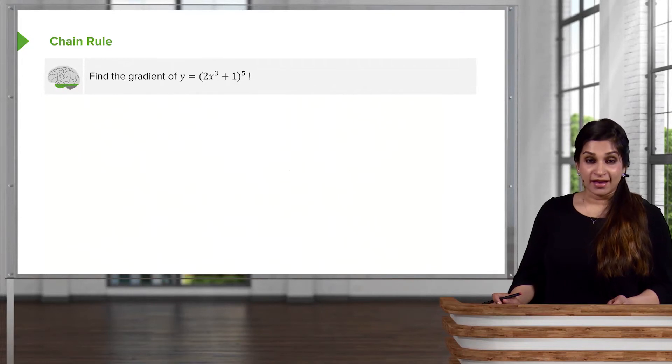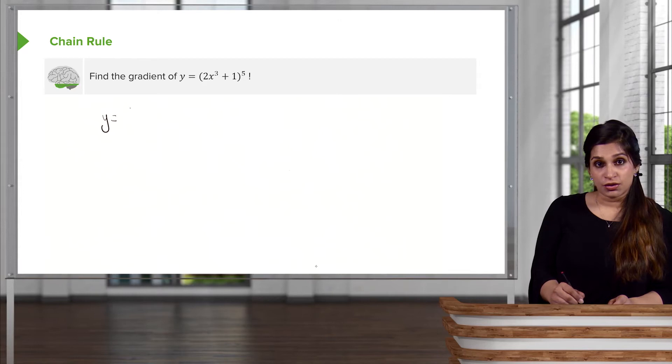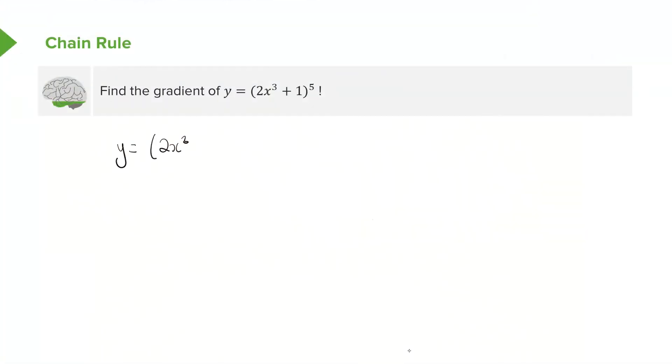So let's look at our problem again, a little bit closely now. We have y = (2x³ + 1)⁵. Now let me just explain what I meant earlier when I said a function of a function. You have one individual function here, which is 2x³ + 1, and then that is inside another function, which is something to the power of 5.